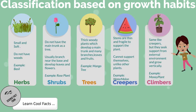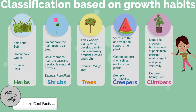Classification based on growth. Herbs: Small, soft, and doesn't have wood. They are small in size, usually around one meter above the ground. Example: basil. Shrubs: Do not have a main trunk like a tree. Usually branch near the base and develop leaves and flowers. Example: rose.